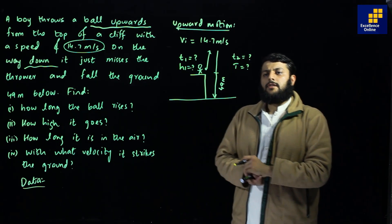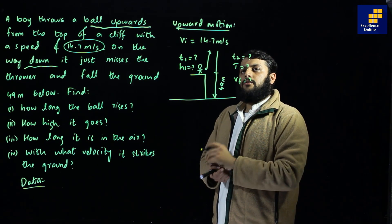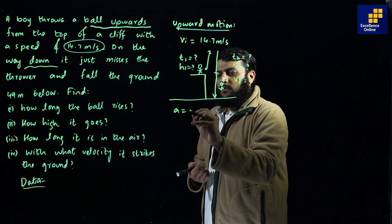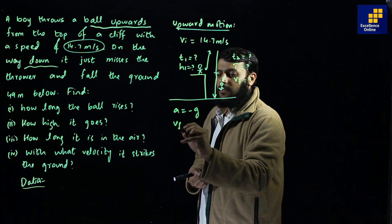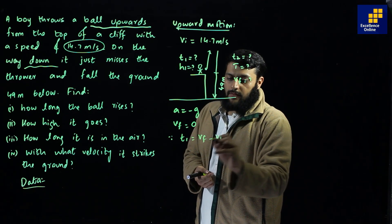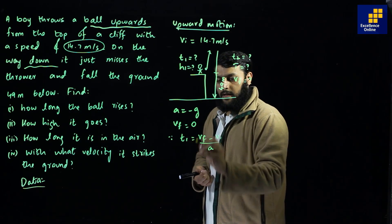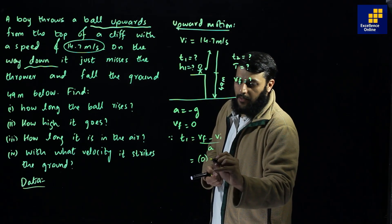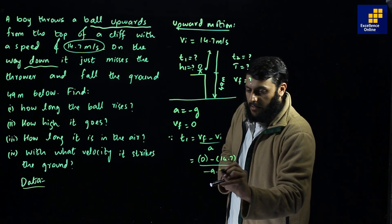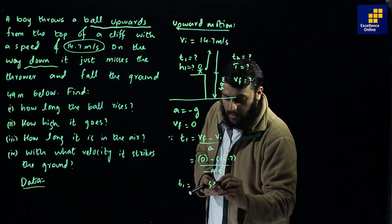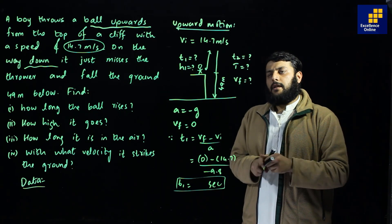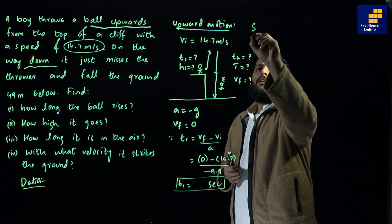Starting with upward motion: vi = 14.7 m/s, acceleration = −g = −9.8 m/s², and final velocity vf = 0 at the top. Using t1 = (vf − vi) / a, with vf = 0, vi = 14.7, and a = −9.8, we can calculate t1 in seconds.